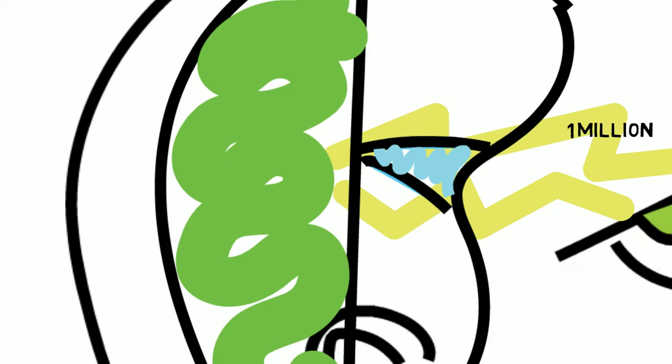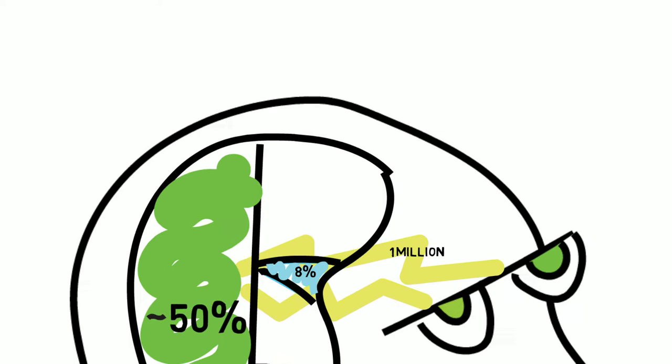You have over 1 million receptors that connect images to your brain versus the 30,000 for audio receptors. Approximately half of your brain is devoted to visual processing versus the 8% that's preserved for audio processing.